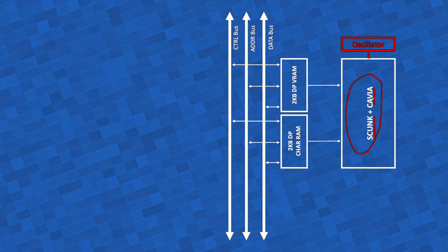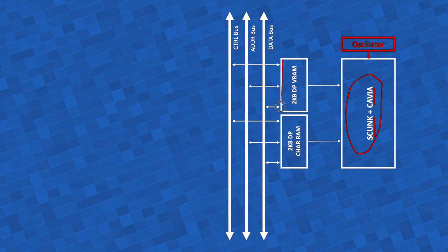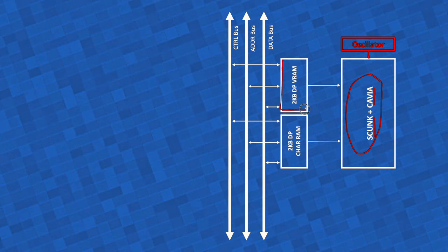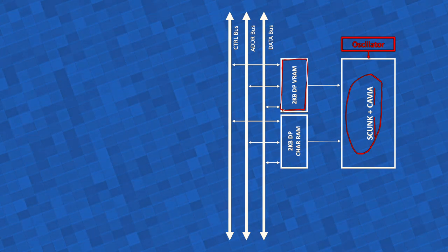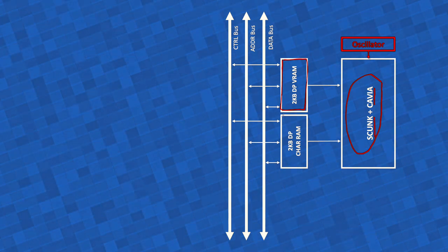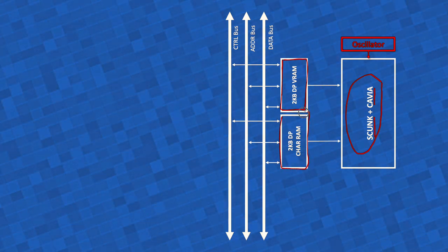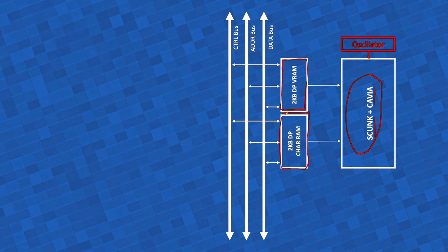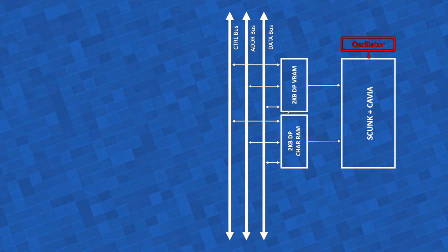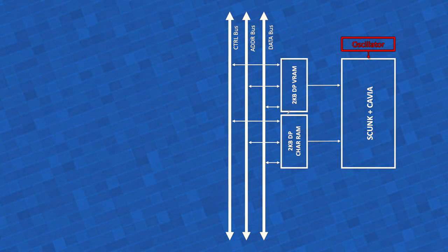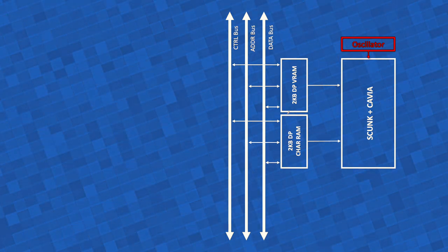You've seen this together with the oscillator, the two dual-ported memories used for video memory here on top, and here below the character definition memory. So all this you've already seen. Now it's time to reveal what you haven't seen yet.